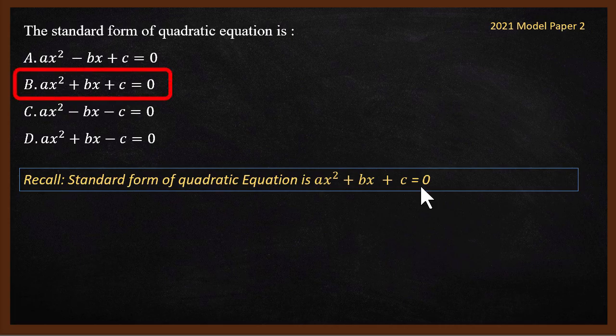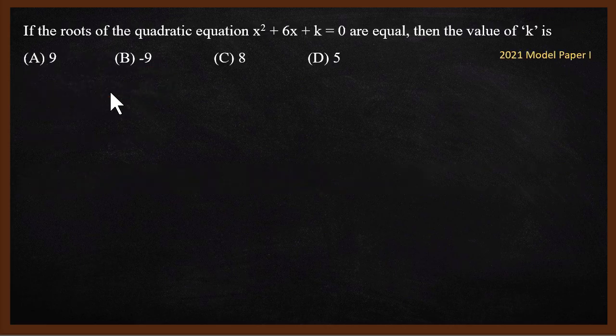ax² + bx + c = 0 is the standard form. So which is the standard form? Answer is B. So standard form will not have negative sign. Standard form is this one. Okay, third question.